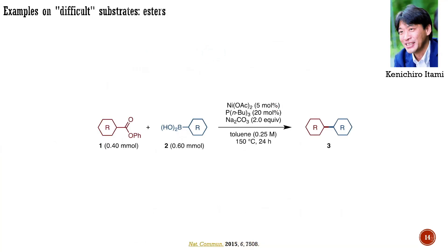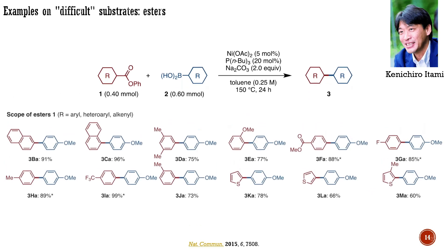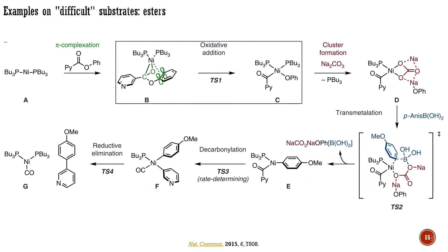In 2015, the group of Itami was among the first to report that esters of aryl carboxylic acids can be suitable electrophilic coupling partners for reactions involving boronic acids. The catalytic system enabling this transformation was based on nickel acetate and a strong sigma-donor but non-bulky tributylphosphine. The major drawback of the developed methodology was the need to use a very high reaction temperature. The substrate scope demonstrated in the report was also impressive. With a user-friendly and inexpensive nickel catalyst, a range of phenyl esters of aromatic, heteroaromatic, and aliphatic carboxylic acids react with boronic acids in a decarbonylative manner.